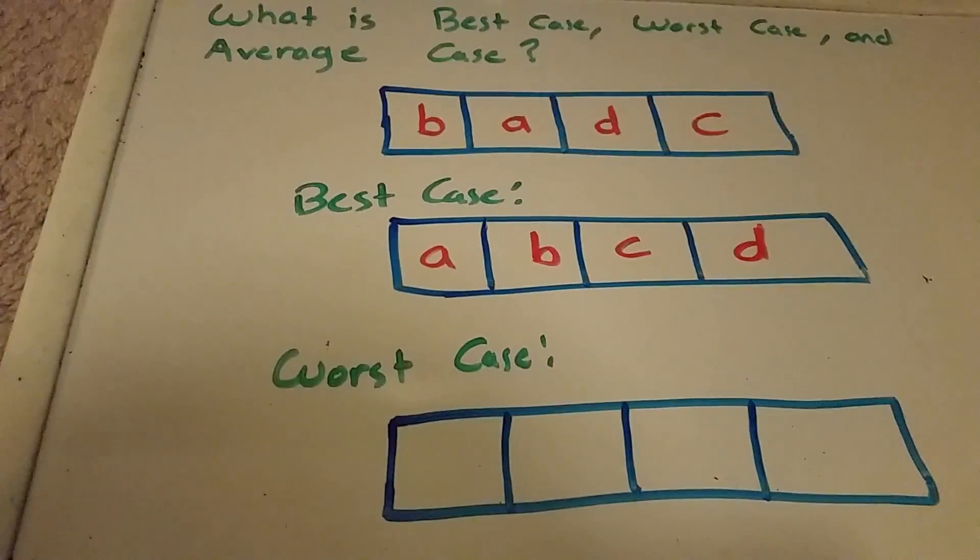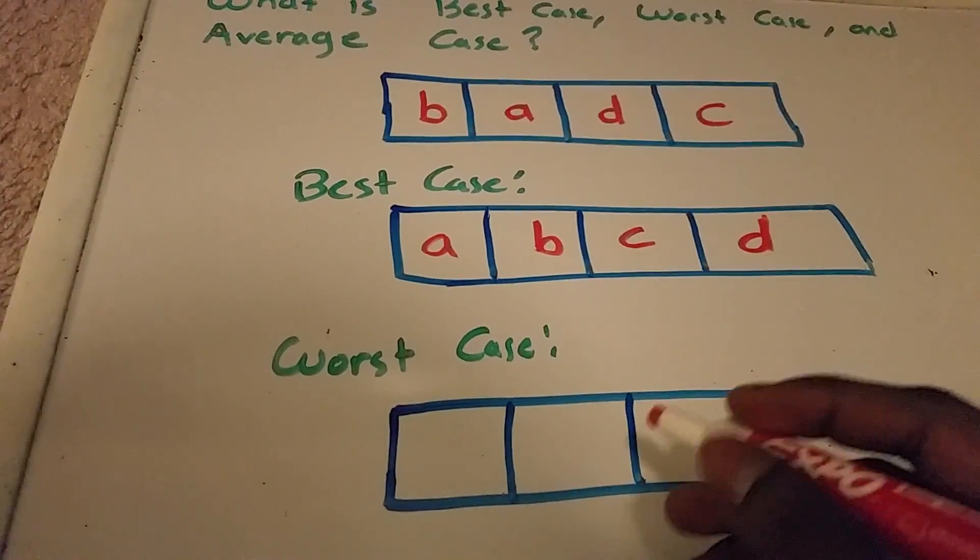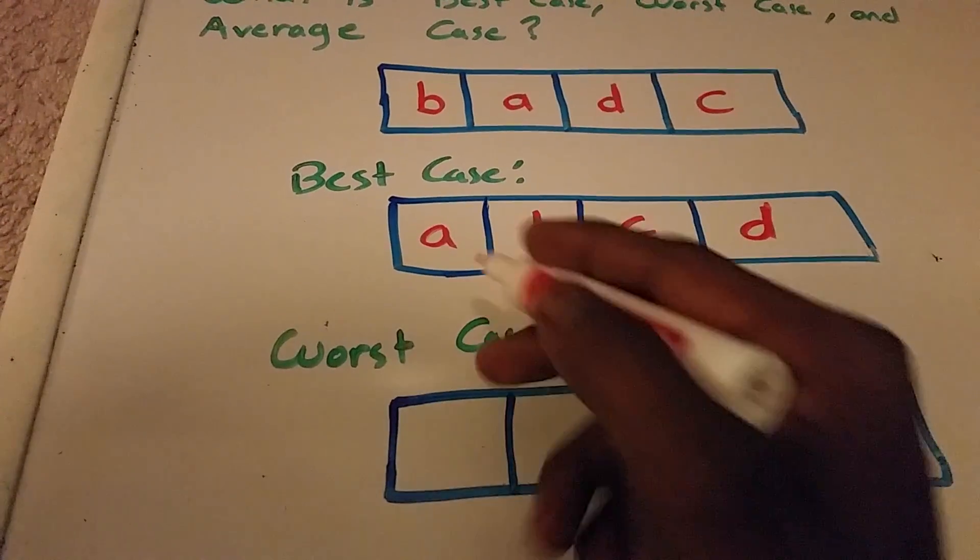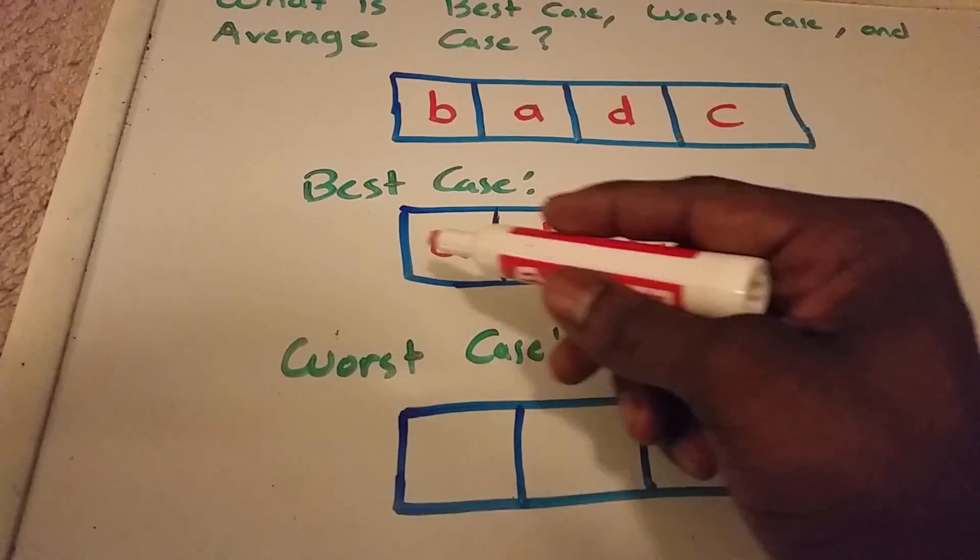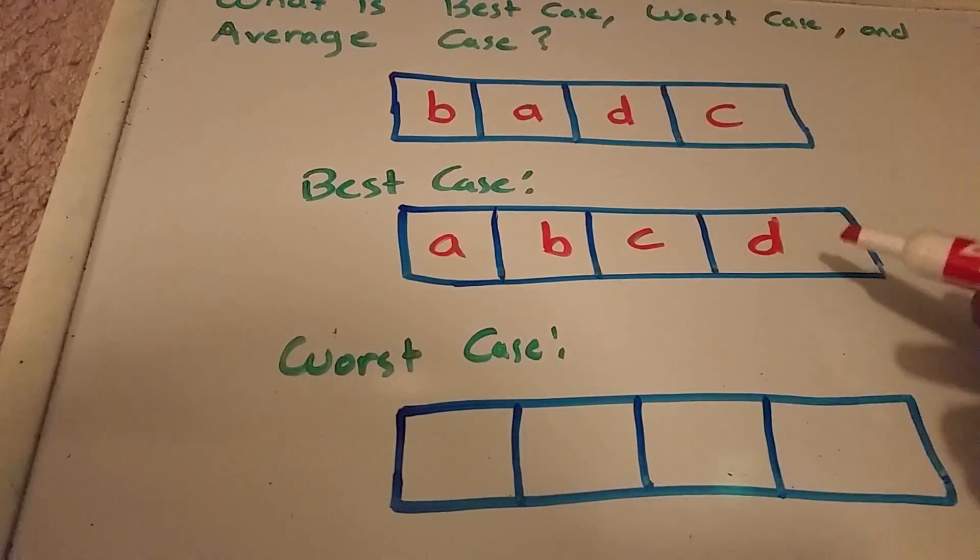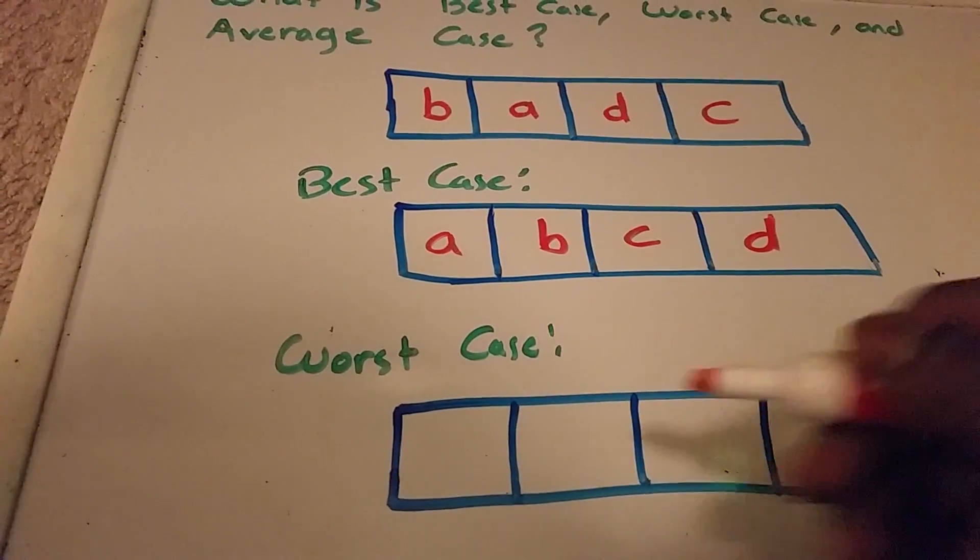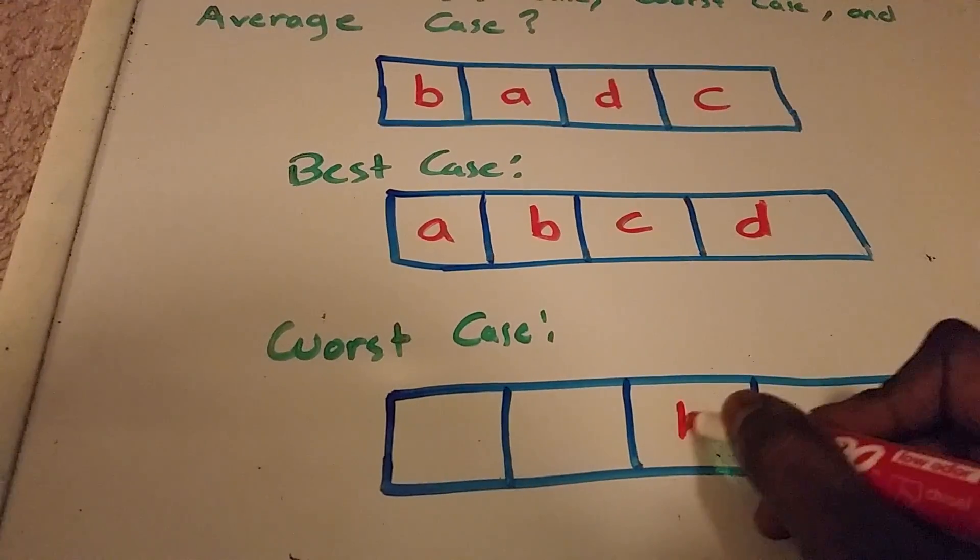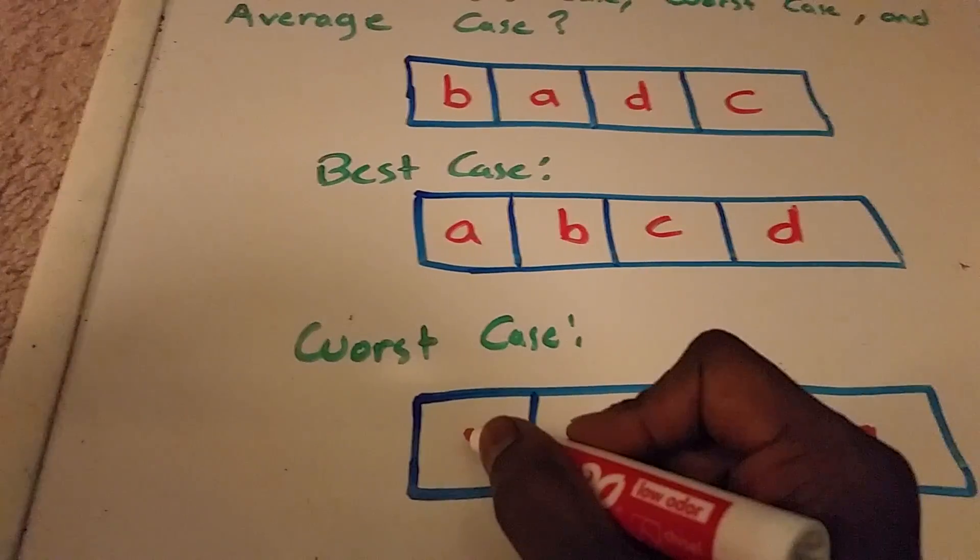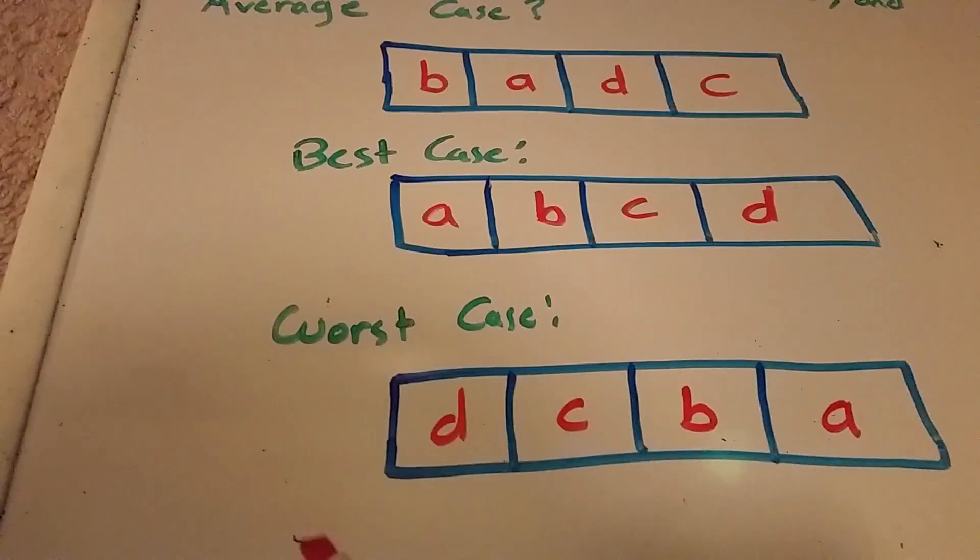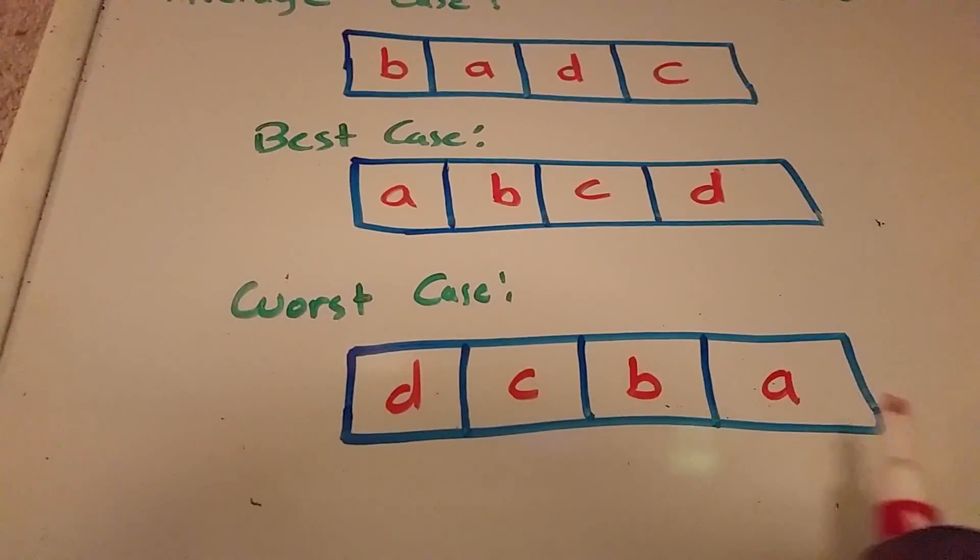So it's no longer in alphabetical order. Well it is, but not from the start of the alphabet to the last. This will be the opposite. So that would be our worst case.